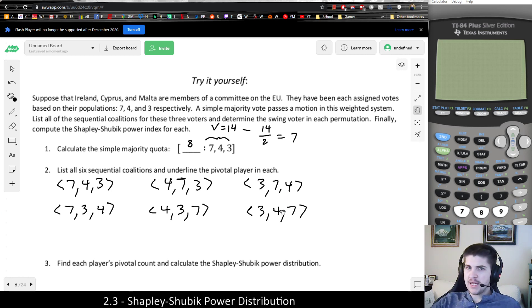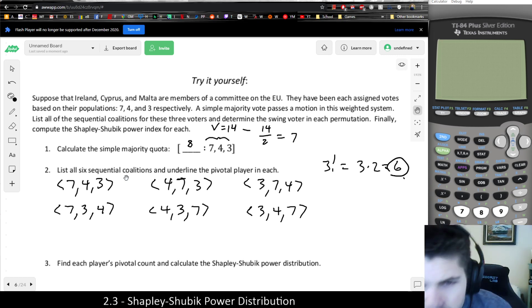And that would be it. So it says there's only 6, but basically that would be given by the number n factorial. There's three players, which is 3 times 2. But basically, if you ever want to know how many you're going to have, you can always just do that calculation.